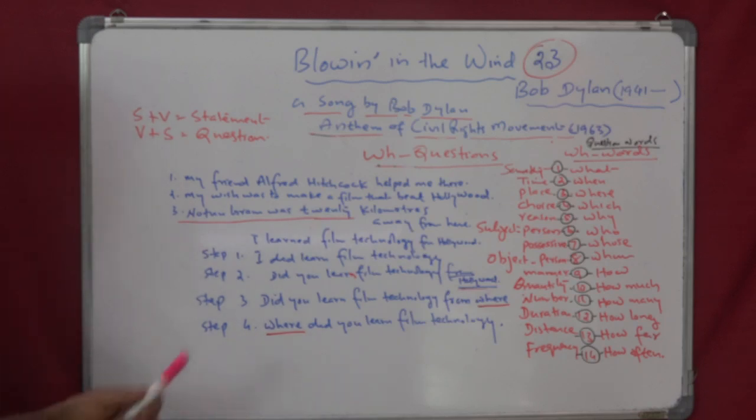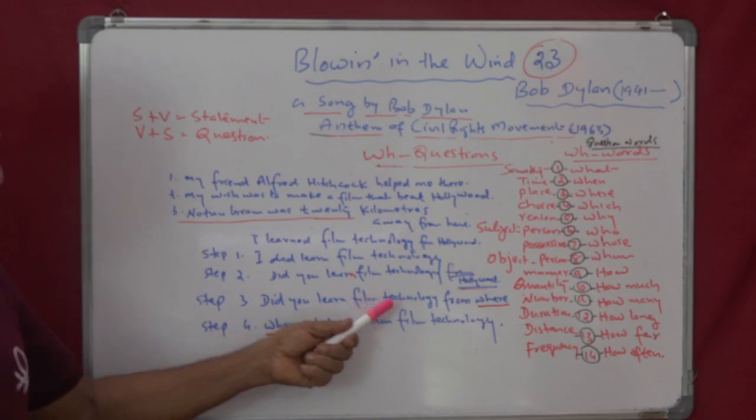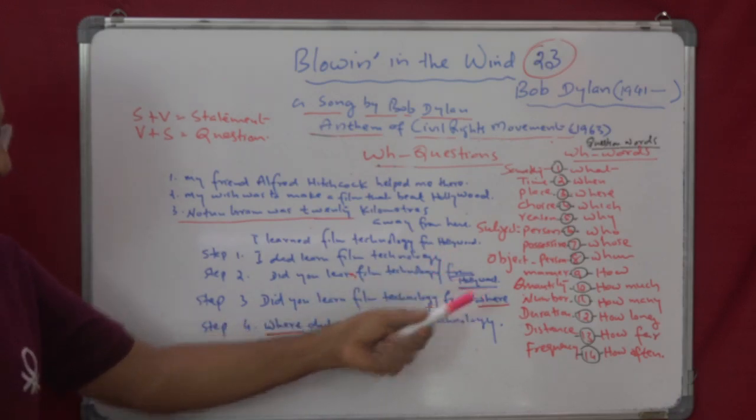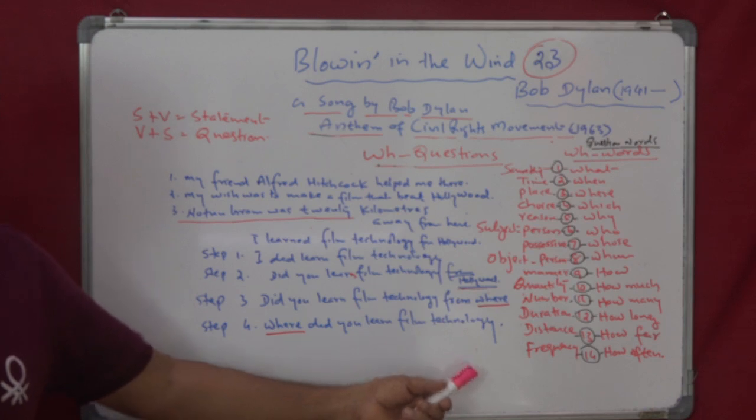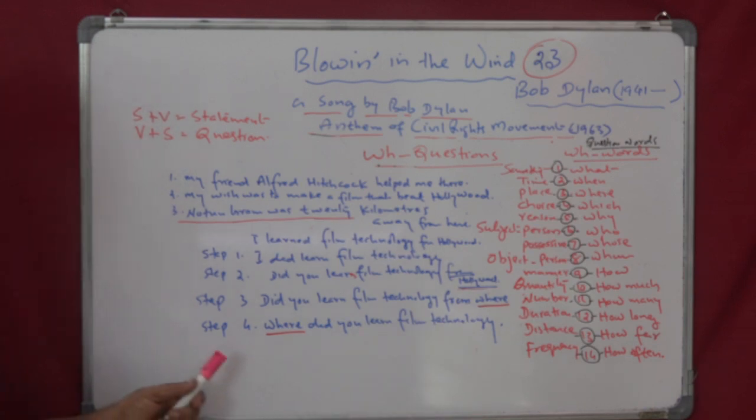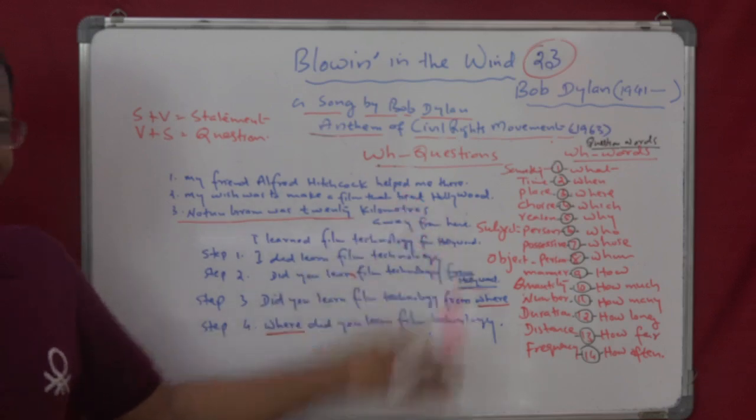Now, when you have the third step, did you learn film technology from, instead of Hollywood, you write here the suitable or the appropriate question word. And here it is a place. So, you have to use where. Now, the fourth and the last step is, a question has to begin with a question word. Therefore, what will you do? You have to take the where at the end of the sentence to the front or the beginning of the sentence. And then it will become, where did you learn film technology? And that will be your answer.